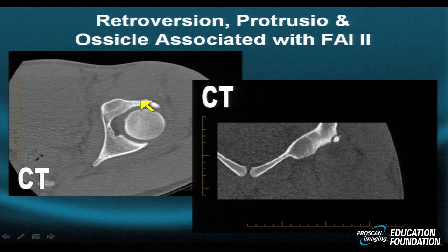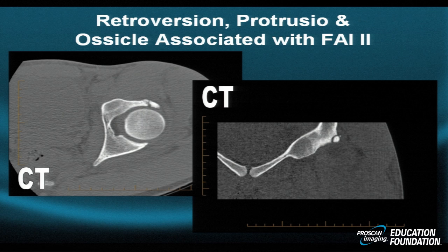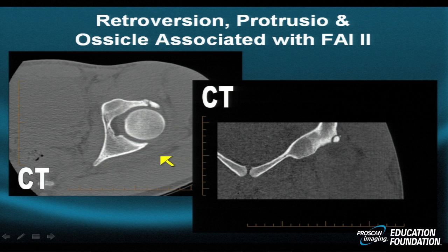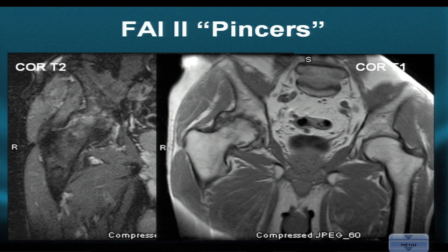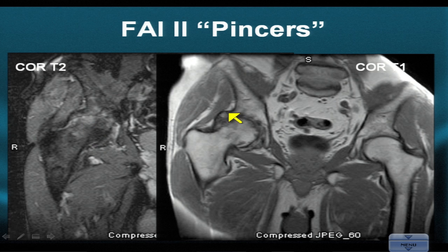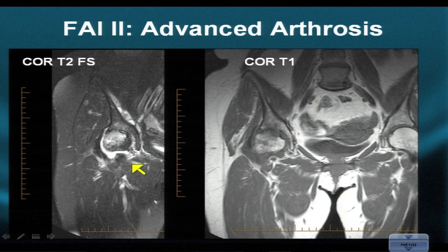The ossicle may contribute to acetabular retroversion. The anterior column of the acetabulum is more lateral than the posterior column, forcing the femoral head posteriorly into a posterior rotated position — the phenomenon of retroversion — and the cup is too deep, achieving acetabular protrusion. The two pincers are seen wrapping around the femoral head in the axial projection. In the coronal projection, severe advanced osteoarthritis is evident with complete loss of cartilage, bony sclerosis, osteoedema, erosions, and large pincer crab claw spurs superiorly and inferiorly, with severe premature unilateral osteoarthritis of the right hip compared with the left.